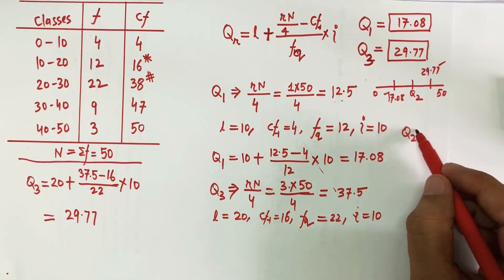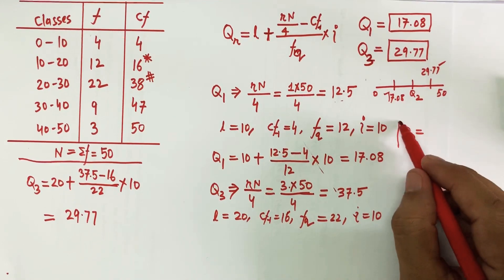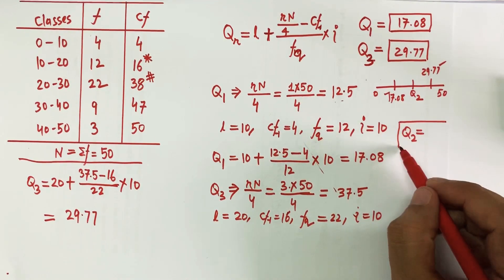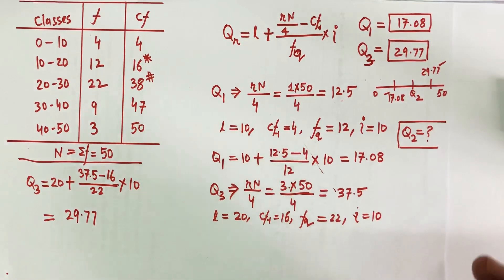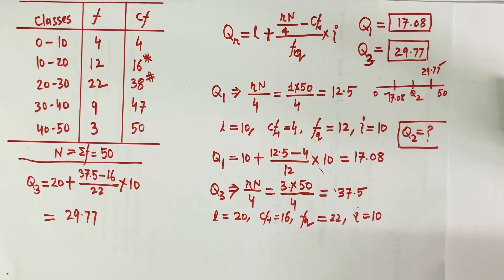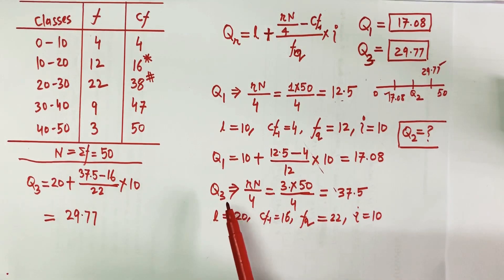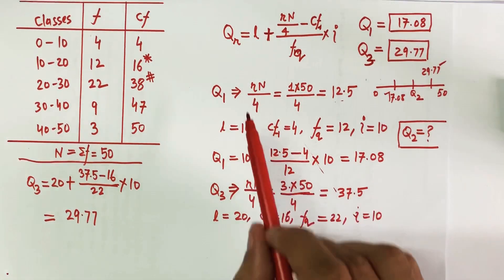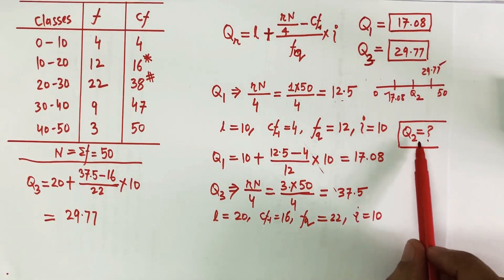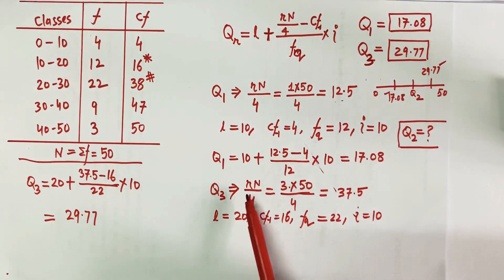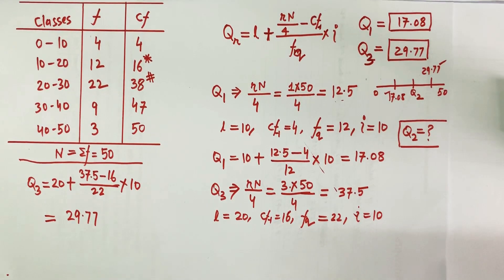I leave the calculation of Q2 as an exercise for you. Follow exactly the same pattern — the only difference is putting r equal to 2 instead of 1 or 3, and the rest of the calculation remains the same. That value shall also be equal to the median. You can refer to previous videos as well. Try out the value of Q2 — thank you.